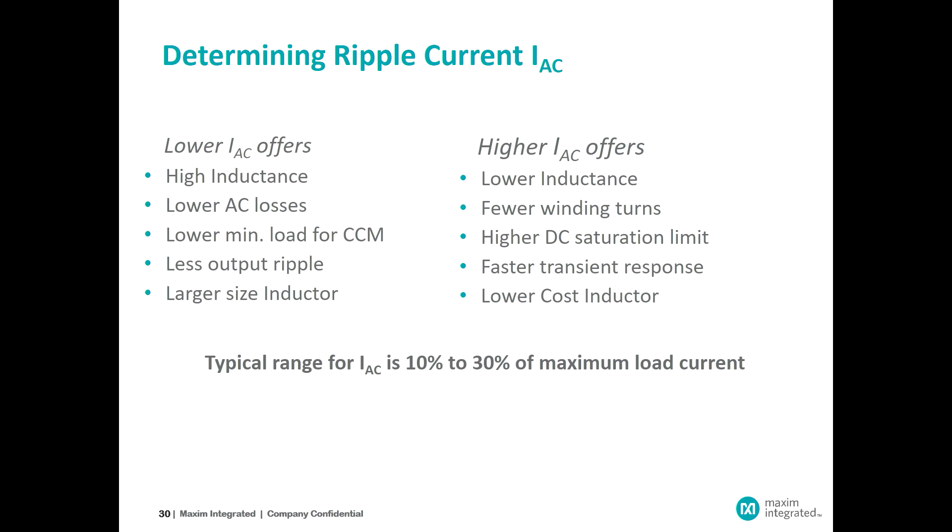To answer the question of how much, the rule of thumb is somewhere between 10% to 30% of the maximum load current to be delivered to the load. Once you know what the load current should be, some number between 10 and 30% is a reasonable starting point. Once you pick that starting point, you can look at the advantages of going upwards or downwards on the value.